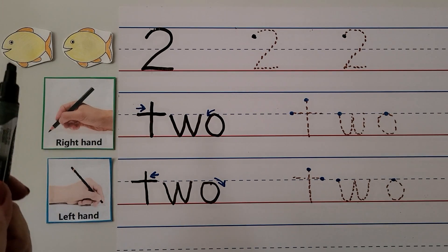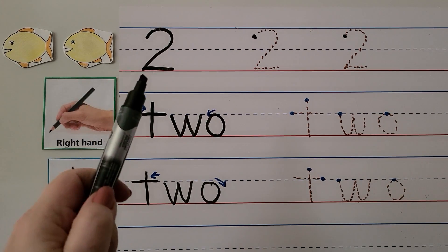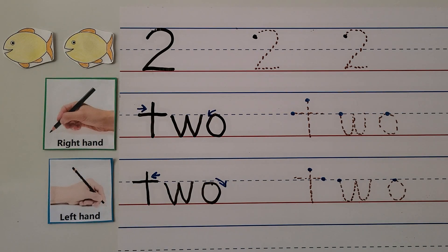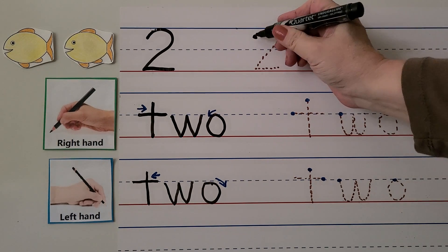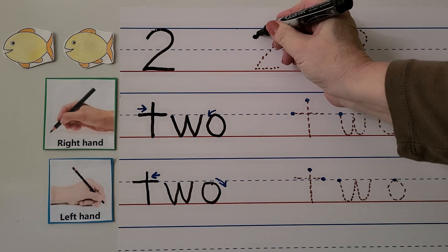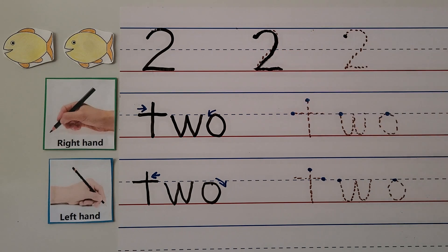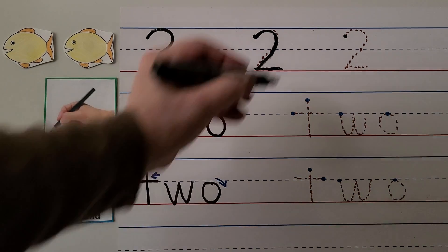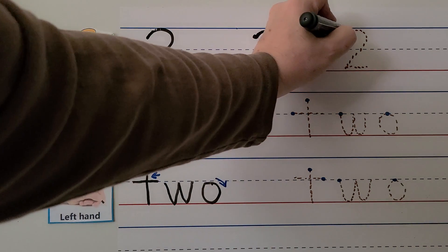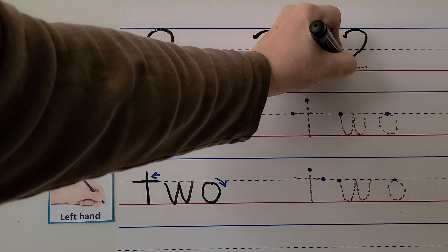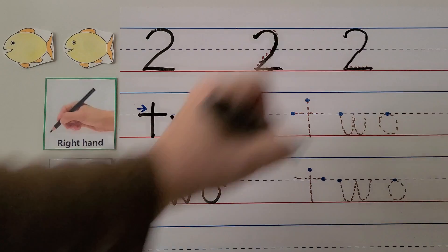Here we have two fish — one, two. We have the number two. We can try writing it with our right hand: start here, come around, then on a slant come down to the line and come across. We can do it with our left hand: start here, come around on a slant, and then come across by the line.